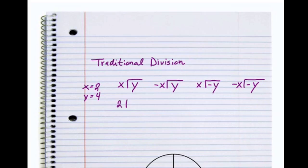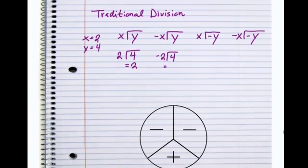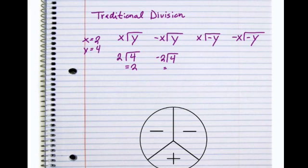So if x is 2 and y is 4, 2 divided by 4 is 2. Negative 2 divided by 4 is... well, a negative number divided by a positive number is going to leave us with a negative number, so it's negative 2.